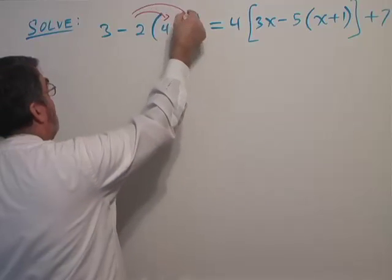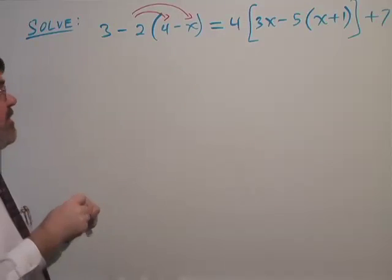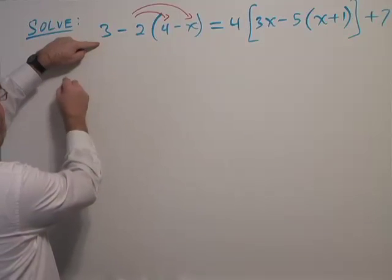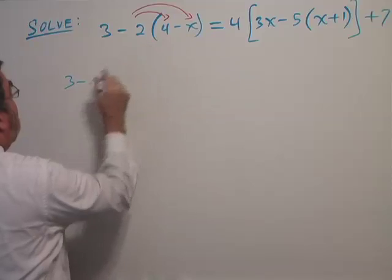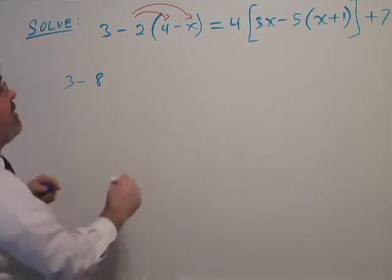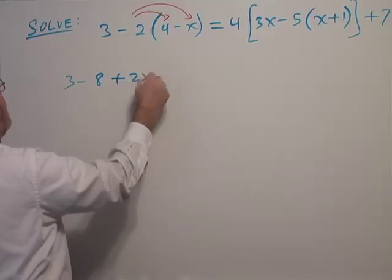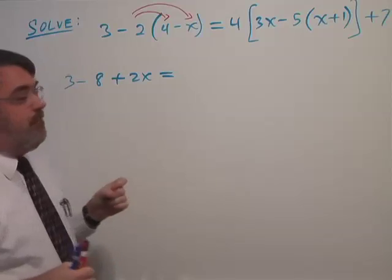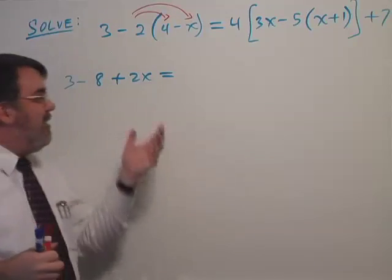This is going to give us 3 minus 2 times 4 - that's minus 8 - then negative 2 times negative x is going to be plus 2x. It's a very common error for people to misdistribute.